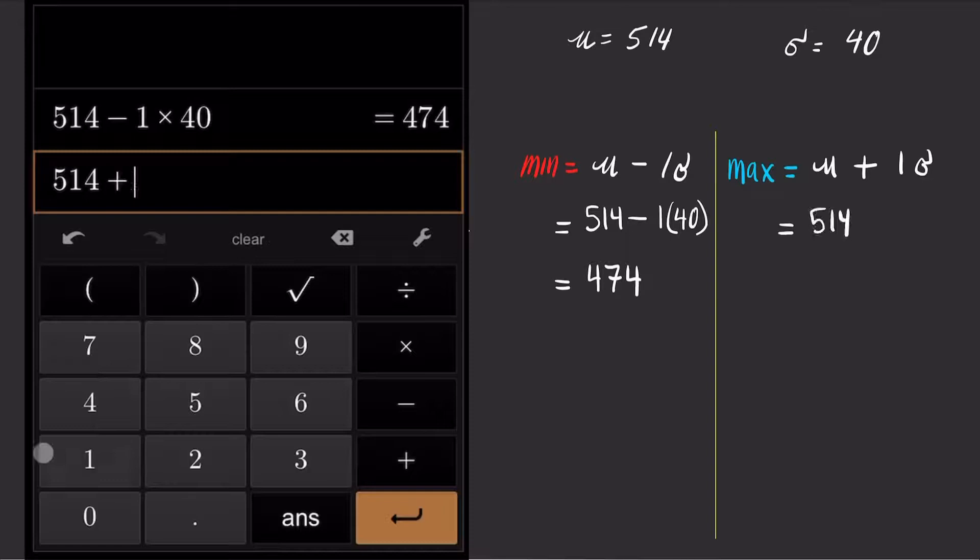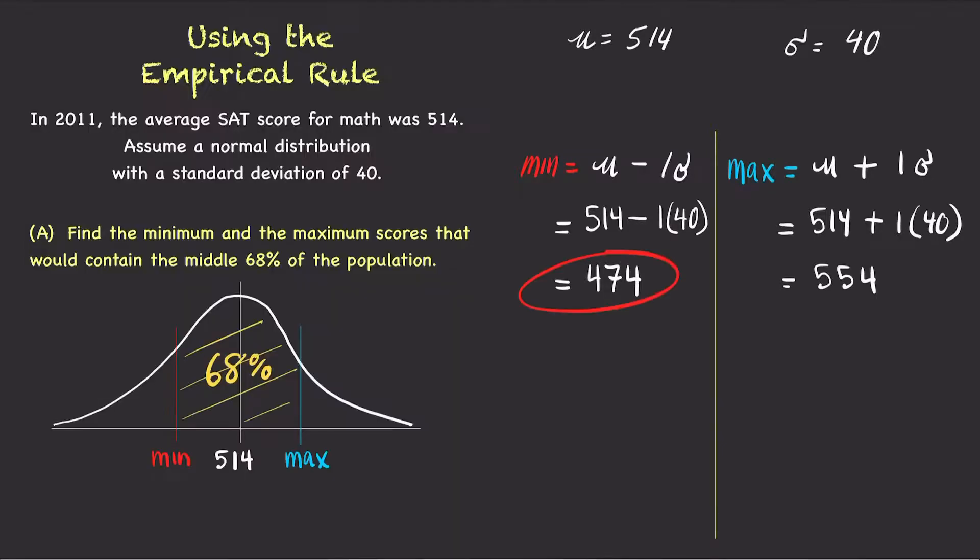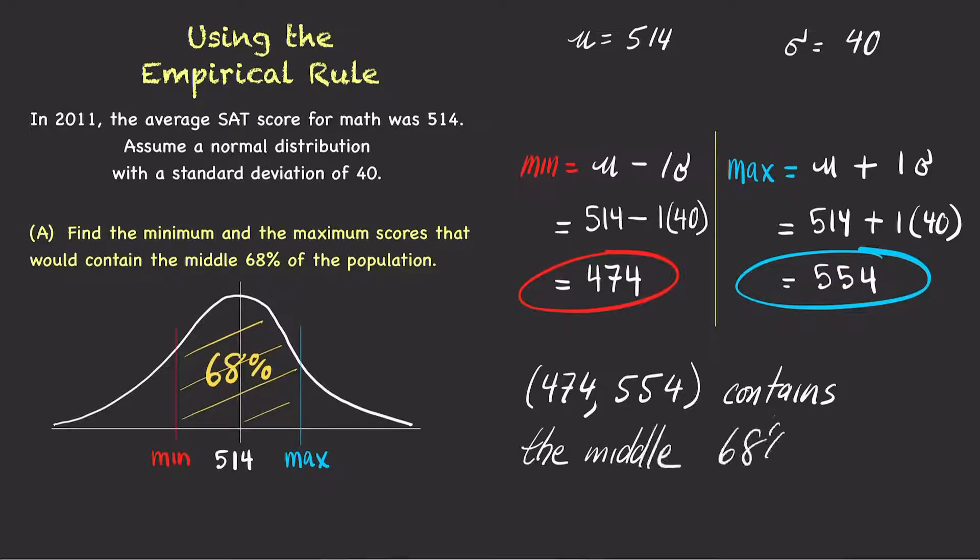Likewise, the maximum score is 554. Therefore, the middle 68% of the population would have scored between 474 and 554.